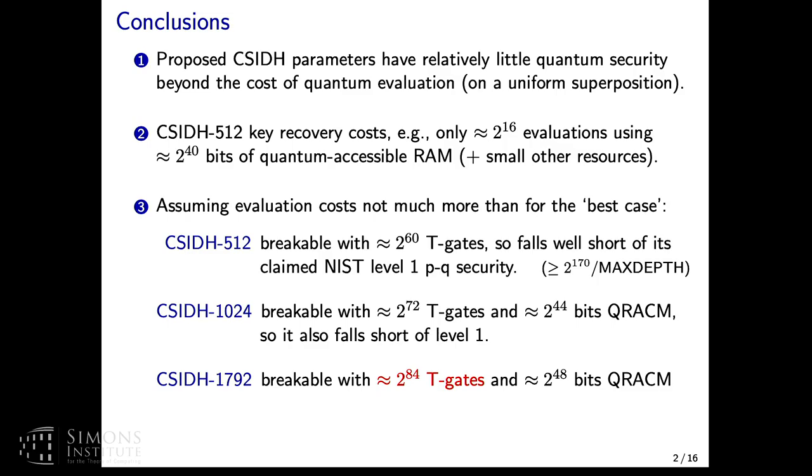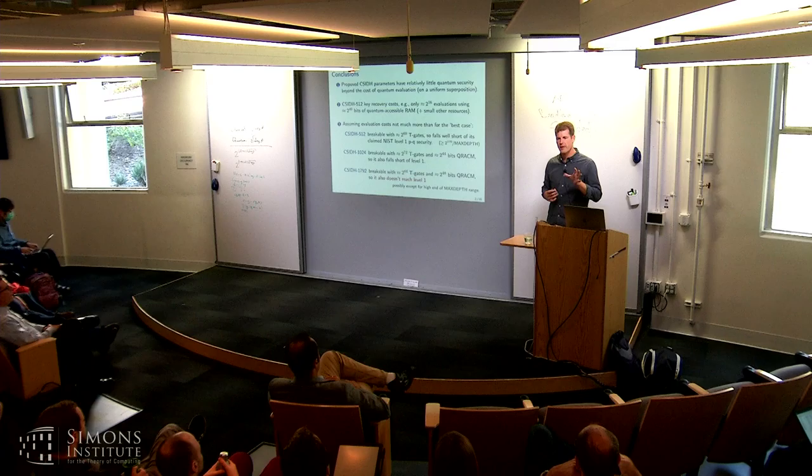What if we go to higher parameters, CSIDH-1024? The numbers don't change all that much. They go up moderately but not too much. We can do breaking it with 2 to the 72 T gates and about 2 to the 44 bits of quantum accessible RAM. That also leaves it short of level 1. For 1792, which was proposed for NIST level 3, you can break it with about 2 to the 84 T gates and this much QRACM.